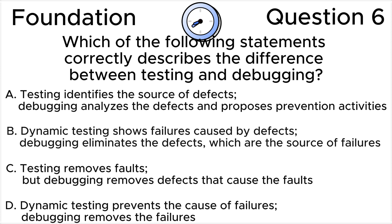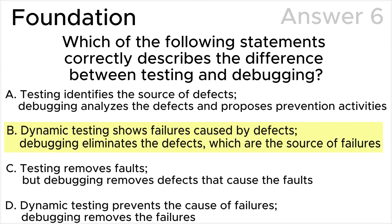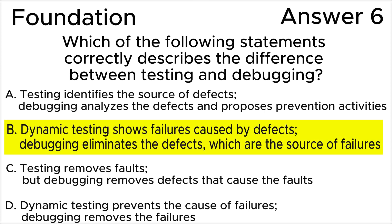Please press plus to choose your own answer before you see the correct answer on the screen. The correct answer is B: dynamic testing shows failures caused by defects in the software; debugging eliminates the defects which are the source of failures. According to the ISTQB syllabus, we will see the exact quote in the explanation section.